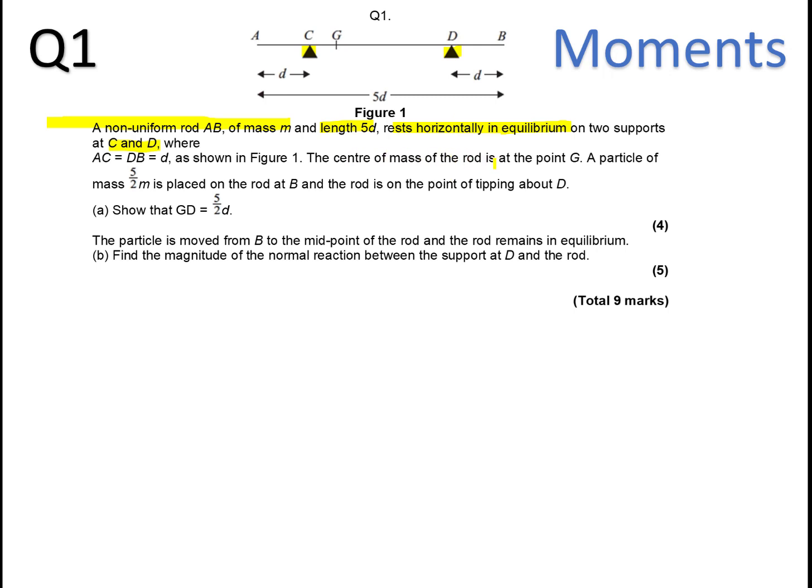The centre of mass of the rod is at point G. Now because it's non-uniform, that's why the centre of mass is not in the middle, it's displaced to the side. Now a particle of mass 5/2M is placed on the rod at B, so it will be placed here, and the rod is on the point of tipping about D. Show that GD equals 5/2D.